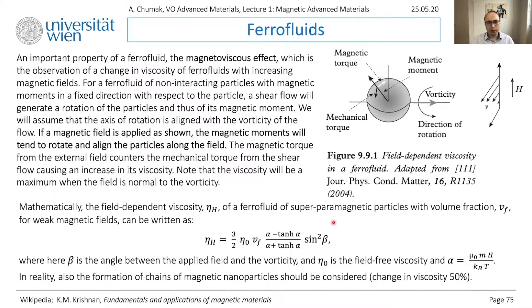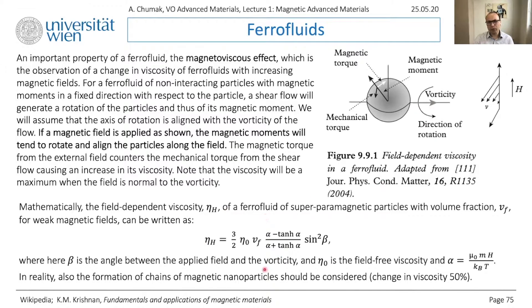Finally there is the parameter beta, which is the angle between the vorticity direction and the applied magnetic field. This effect - the influence of vorticity on viscosity - is maximum when beta is considered. But in real particles you have all different beta angles and need to sum over all of them, and using this formula you come to the conclusion that the viscosity change should be only around three percent.